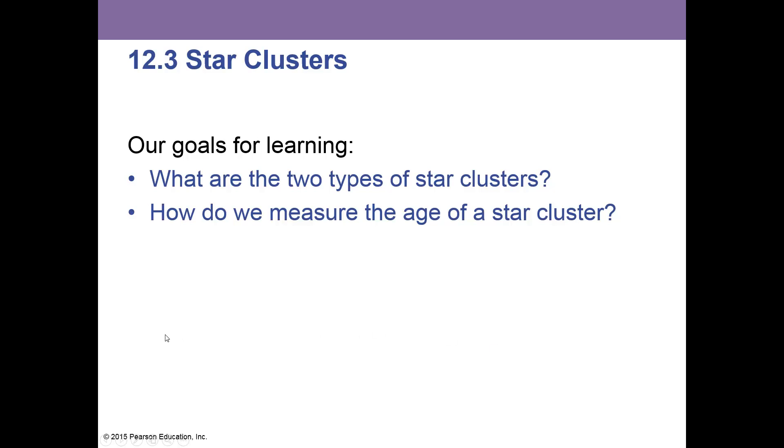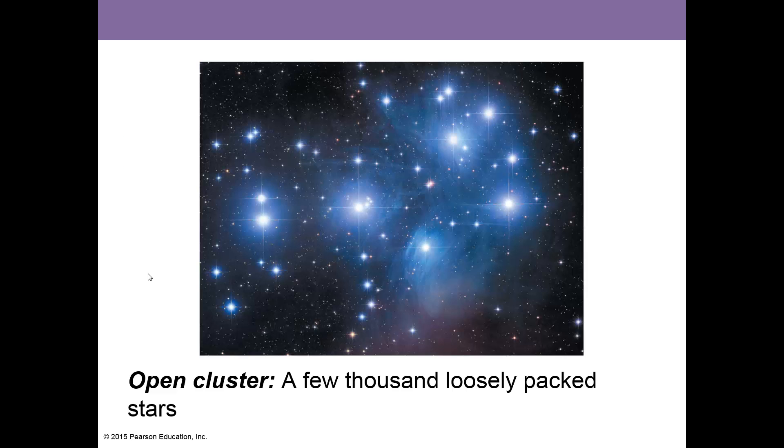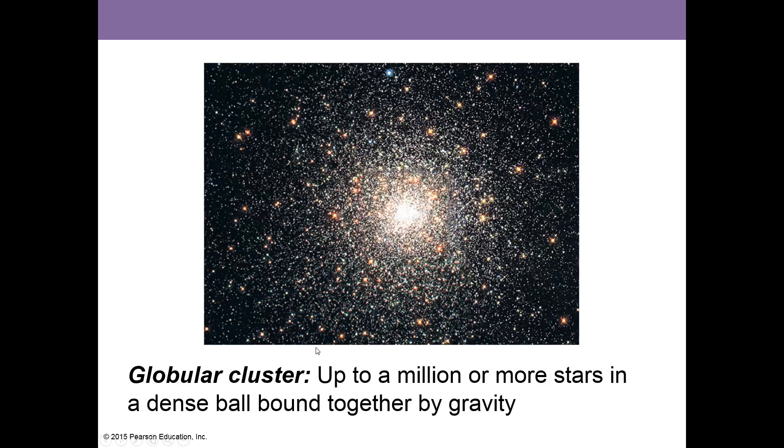Switch gears now to look at star clusters. What are the two types of star clusters and how do we measure the age of a star cluster? Again, here's Annie Jump Cannon and her friends at Harvard. They classified over a half a million stars in their catalog. An open cluster are a few thousand loosely packed stars—this is actually the Pleiades or the Seven Sisters, you can see these in the sky. A globular cluster is up to a million or more stars in a dense ball bound together by gravity. This is very dense and many stars, very old cluster.